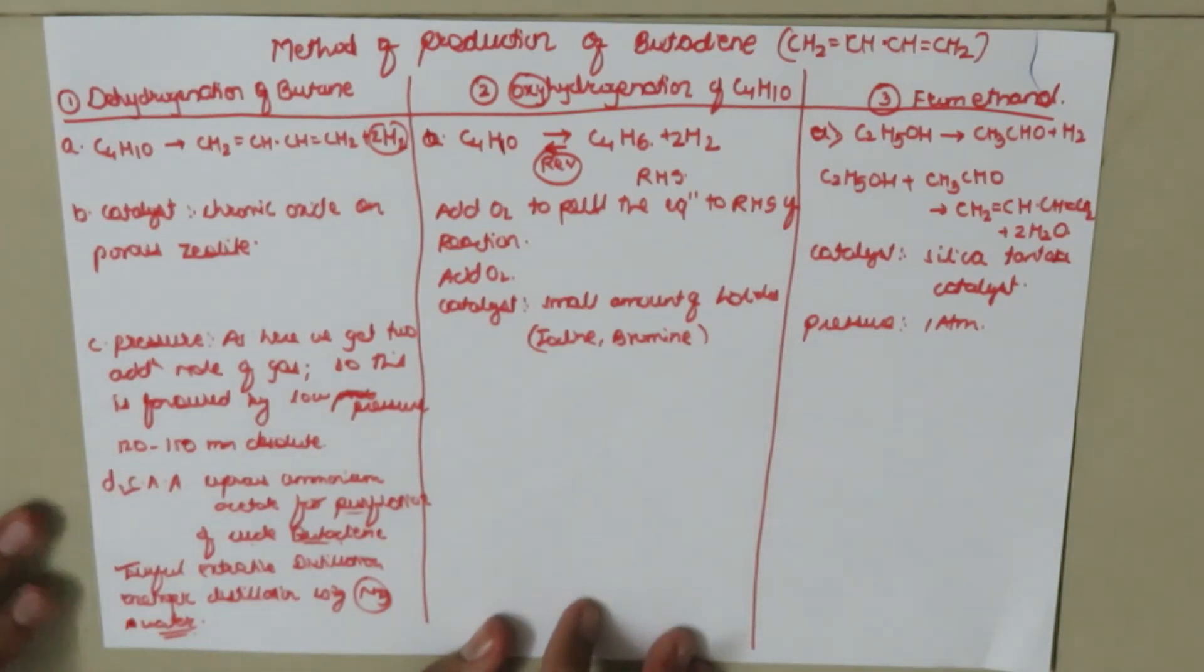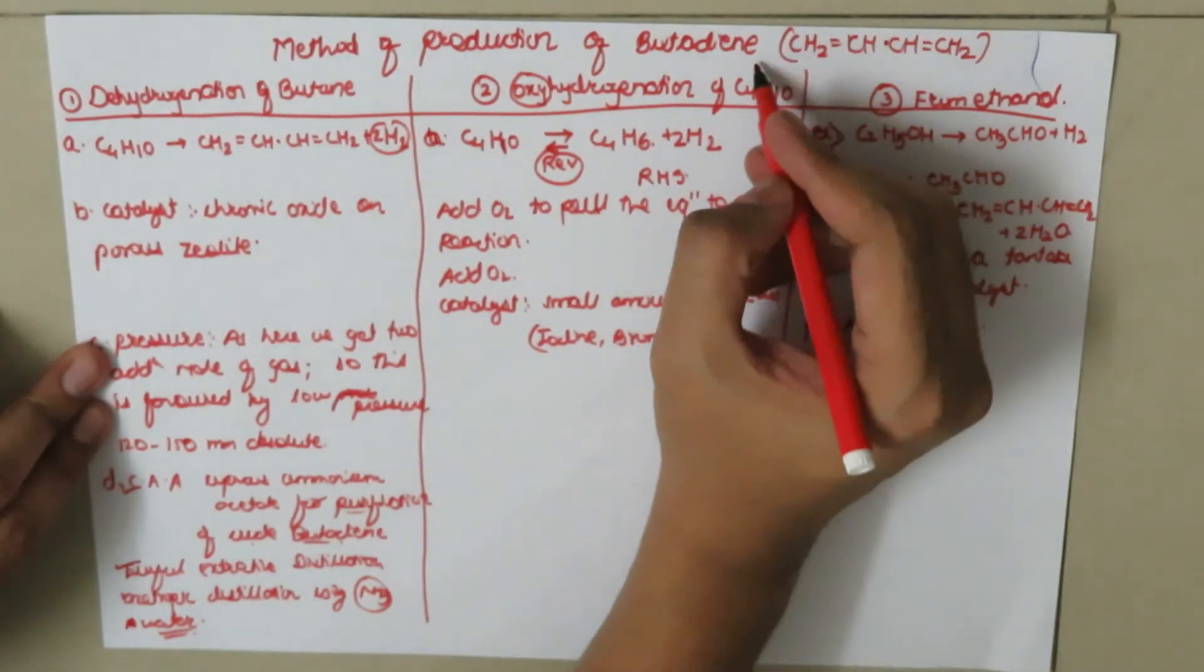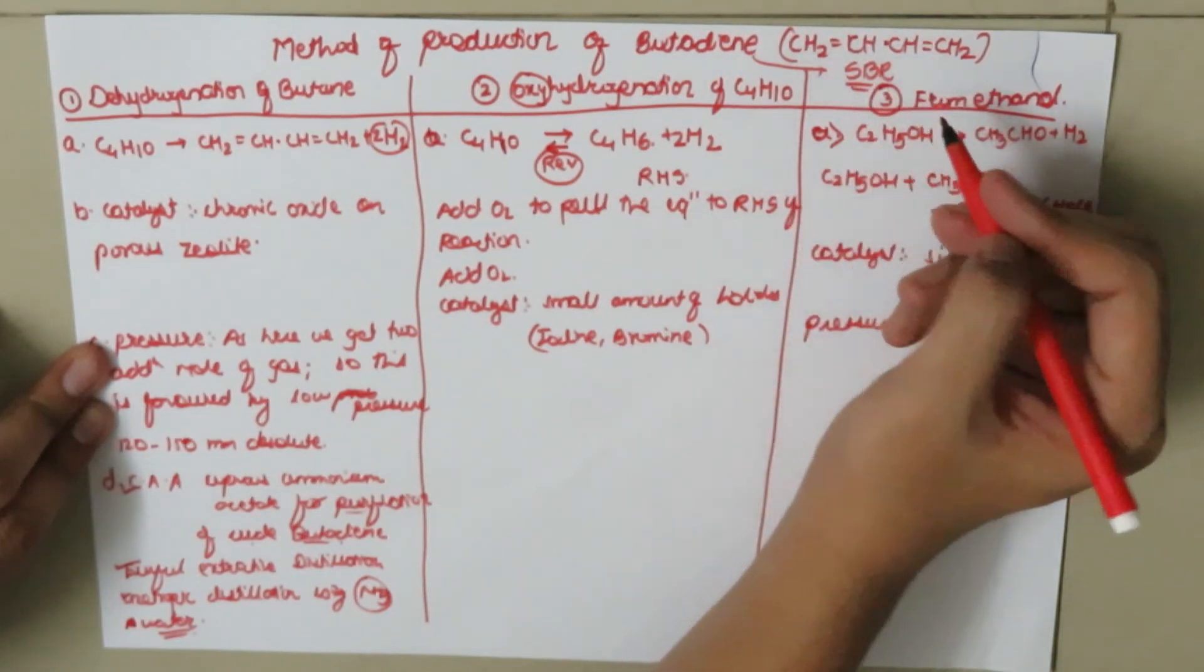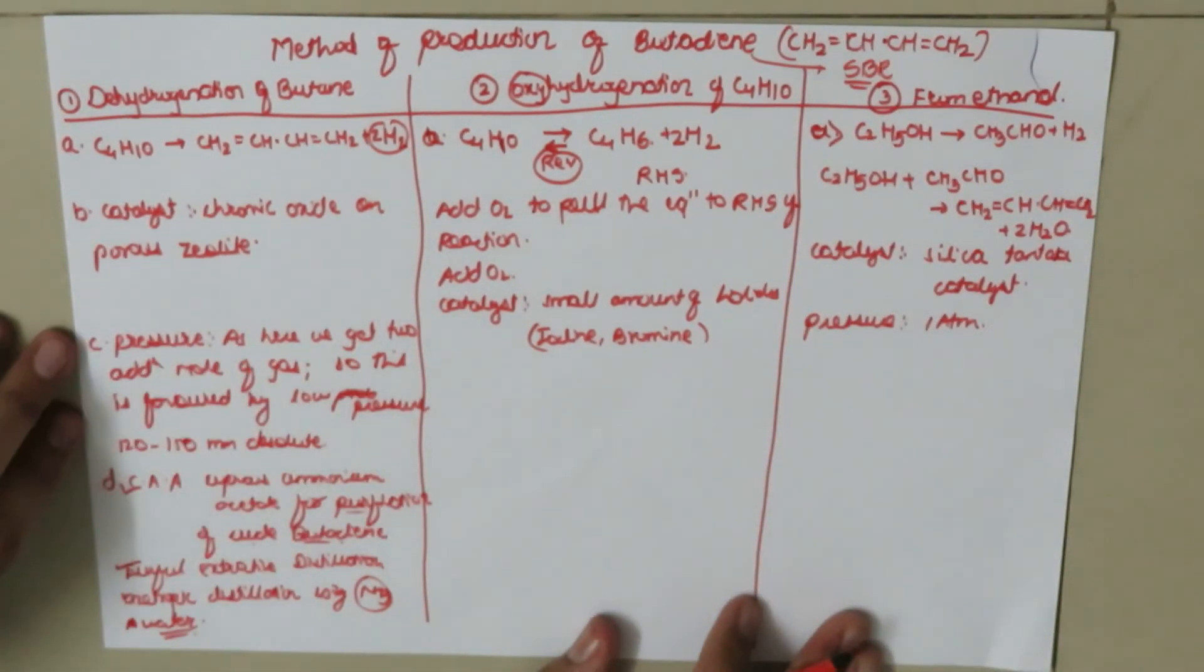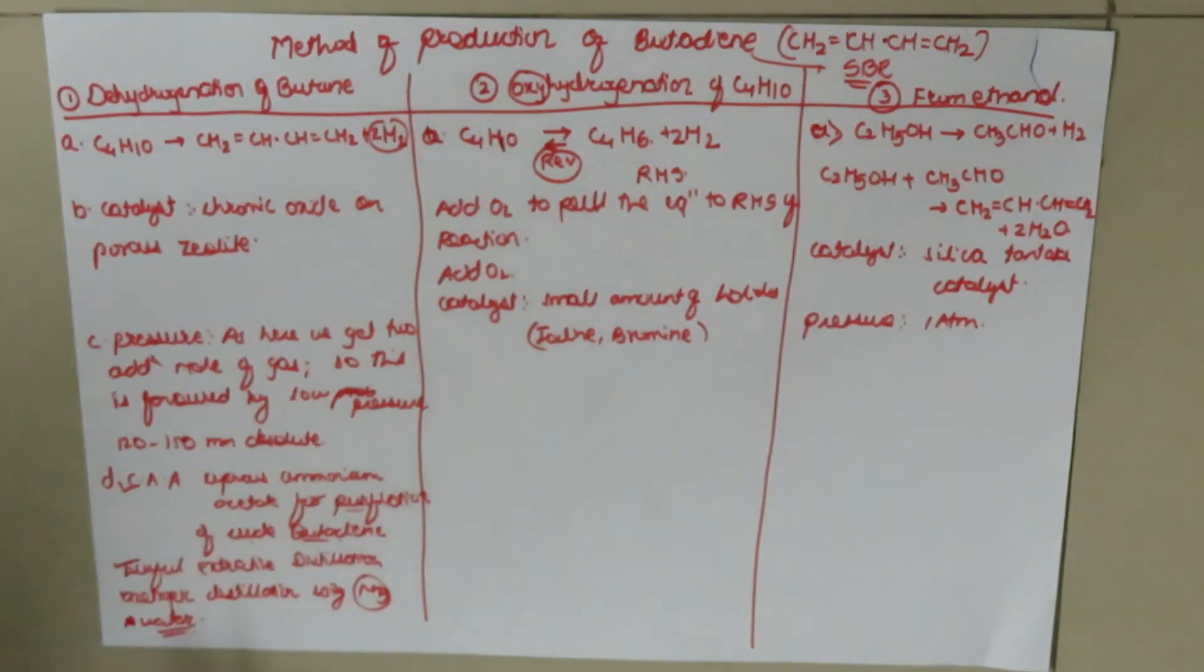So this was all the information regarding the production of butadiene. This production is important because in the future we need to produce styrene-butadiene rubber. This is the main objective to produce butadiene, because we need to produce styrene-butadiene rubber in the future. Thank you for watching this video.